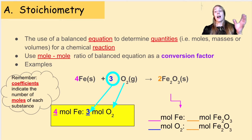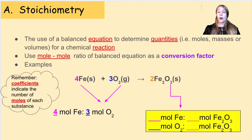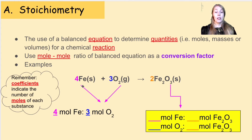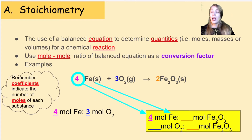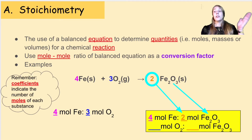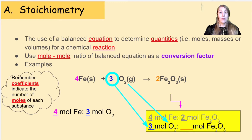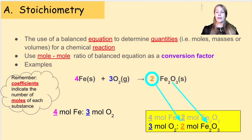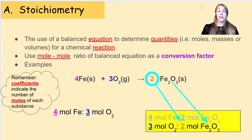Let's look at relating our product Fe₂O₃ to our two reactants, Fe and oxygen. If we're looking at the ratio between moles of Fe and moles of Fe₂O₃: for Fe, the coefficient is four, so four moles of Fe; for Fe₂O₃, the coefficient is two. For oxygen to Fe₂O₃, there's a three in front of oxygen and a two in front of Fe₂O₃ — so three moles of oxygen for every two moles of Fe₂O₃. That means for every two moles of Fe₂O₃ produced, four moles of Fe and three moles of oxygen are used.